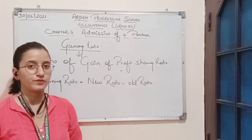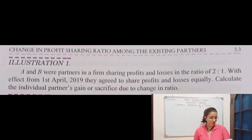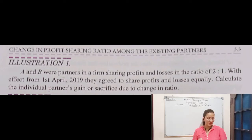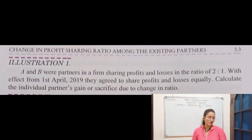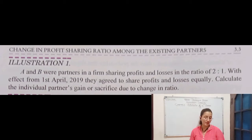Now we will solve some numerical questions based on the calculation of sacrificing or gaining ratio. Question 1: A and B were partners in a firm sharing profits and losses in the ratio 2:1. With effect from 1st April 2019, they agreed to share profits and losses equally. There are 2 partners A and B who were sharing profits and losses in the ratio 2:1, but in future they agreed to share equally, which is 1:1.